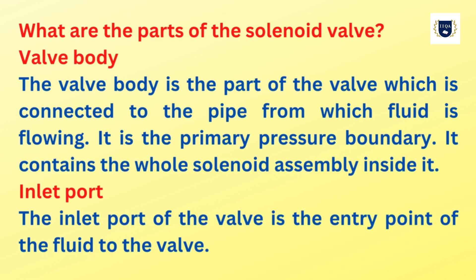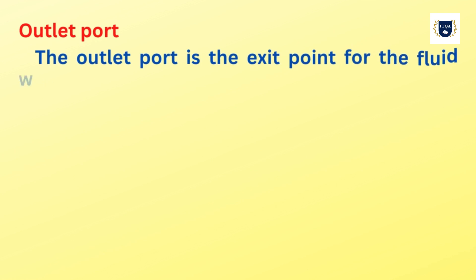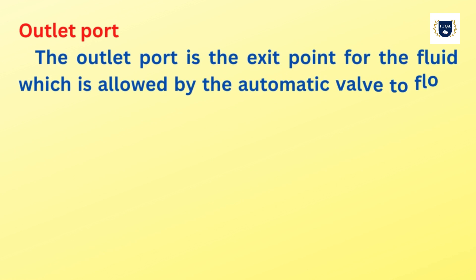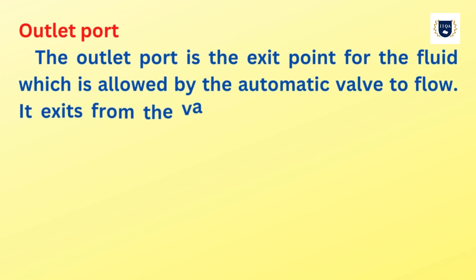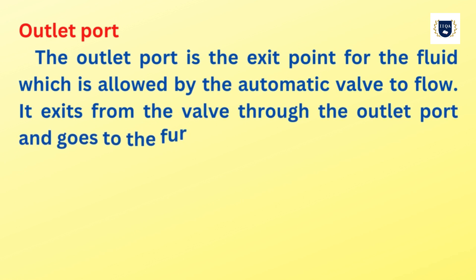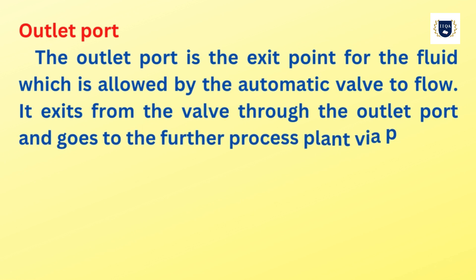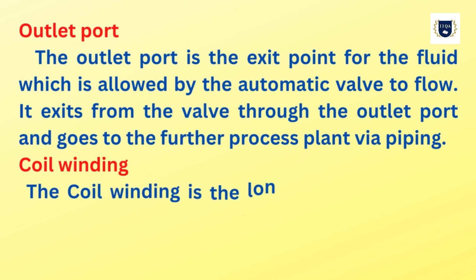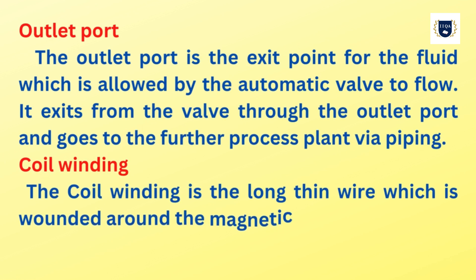Outlet port: the outlet port is the exit point for the fluid which is allowed by the automatic valve to flow. It exits from the valve through the outlet port and goes to the further process plant via piping. Coil winding: the coil winding is the long thin wire which is wound around the magnetic core plunger.